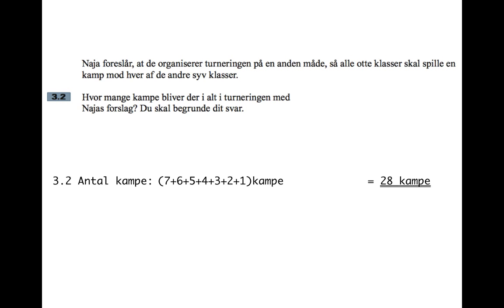One way of looking at it is: the first team has to play seven other teams. Then team number two has already played team number one, so we just consider six other teams they've got to play. Then the next team has got to play five other teams, and so on. So you can think of it as seven plus six plus five plus four plus three plus two plus one, which makes 28.